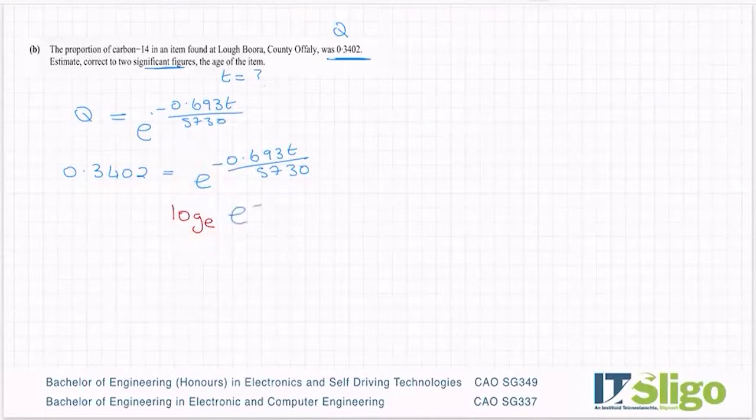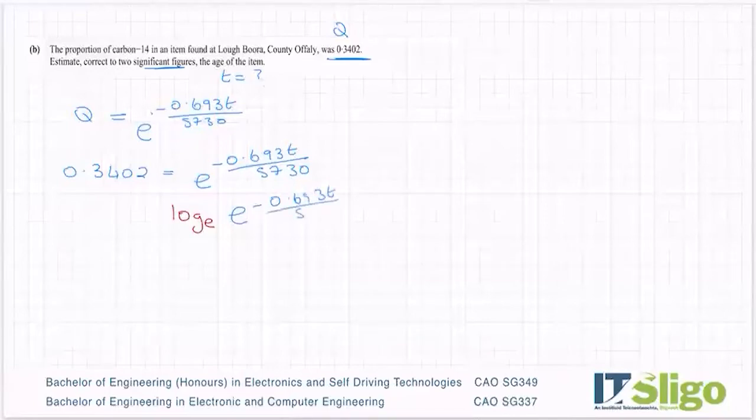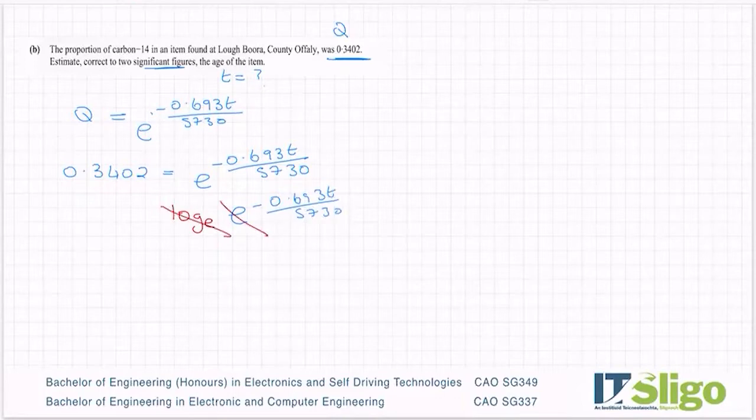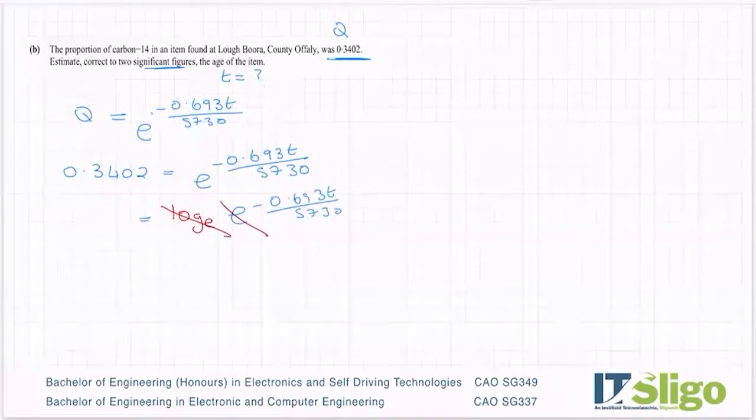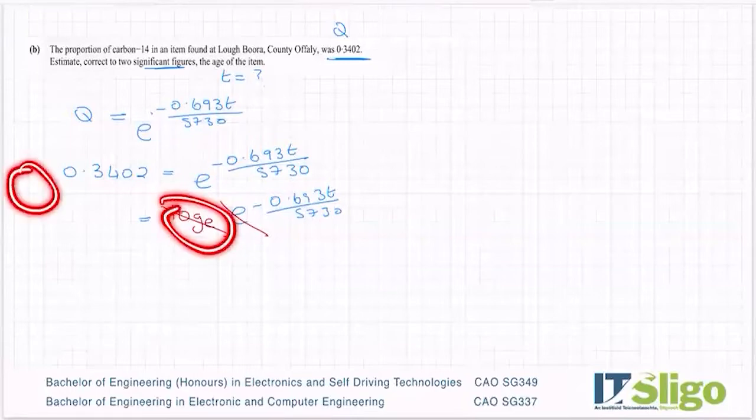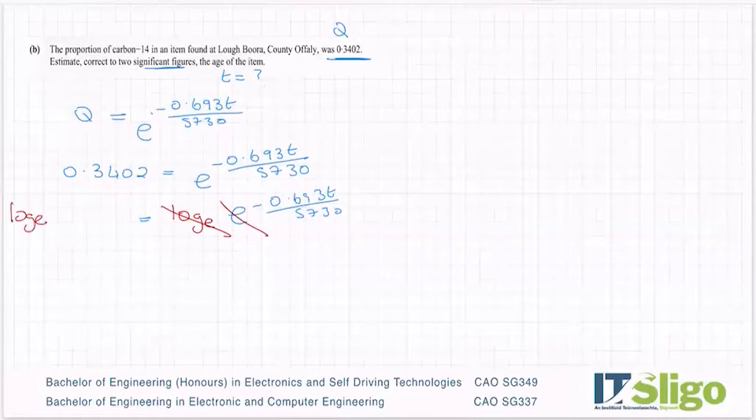Because when I do that, e and log to the base e cancels there on the right. And of course what I do to one side I have to do to the other, so I have to get log to the base e on this side. Log to the base e, what I do to one side I do to the other. So 0.3402.